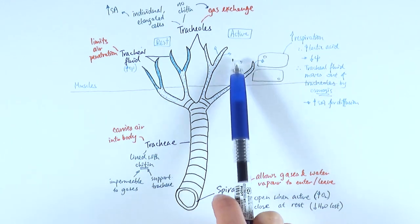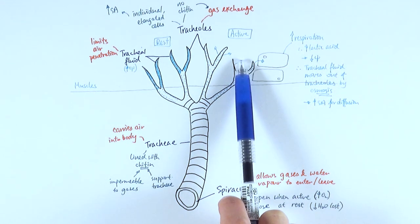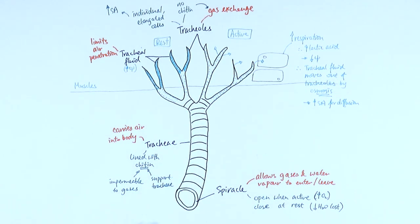So then the oxygen will actually also then follow the water into the surrounding cells and the carbon dioxide can also go into the tracheoles and through the trachea and out of the spiracles in the opposite direction. And that is the gas exchange in insects.